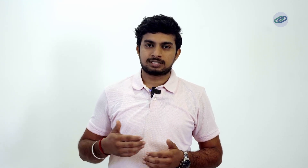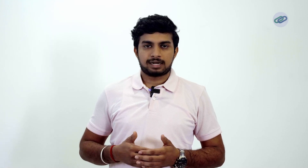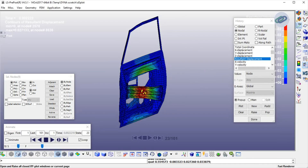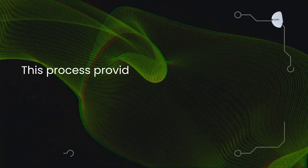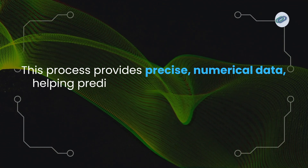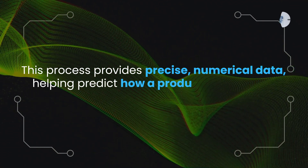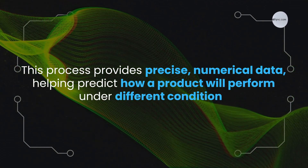For instance, in finite element analysis, engineers break down complex structures into smaller parts or elements to study stresses and strains. This process provides precise numerical data, helping predict how a product will perform under different conditions.